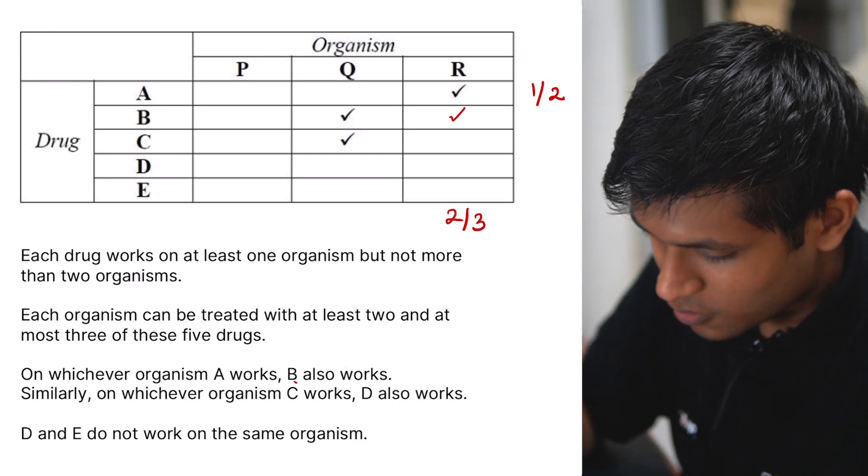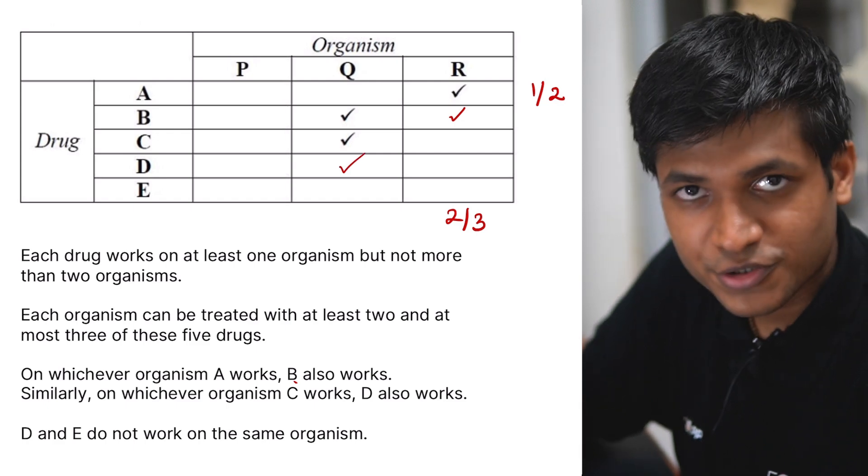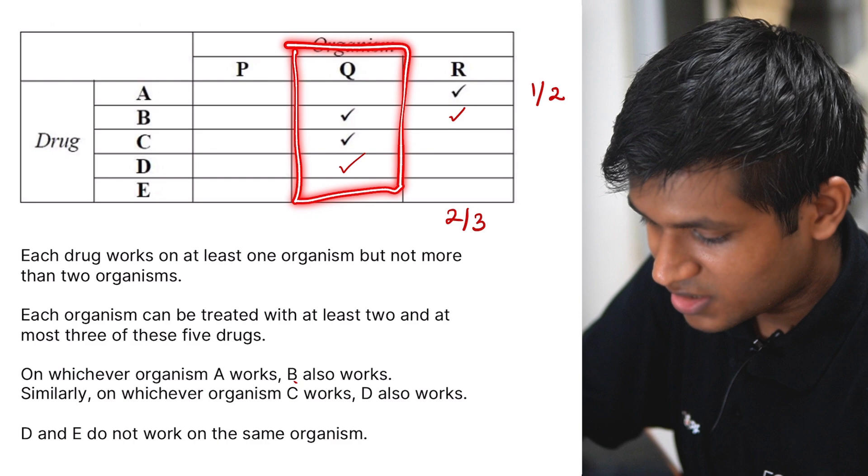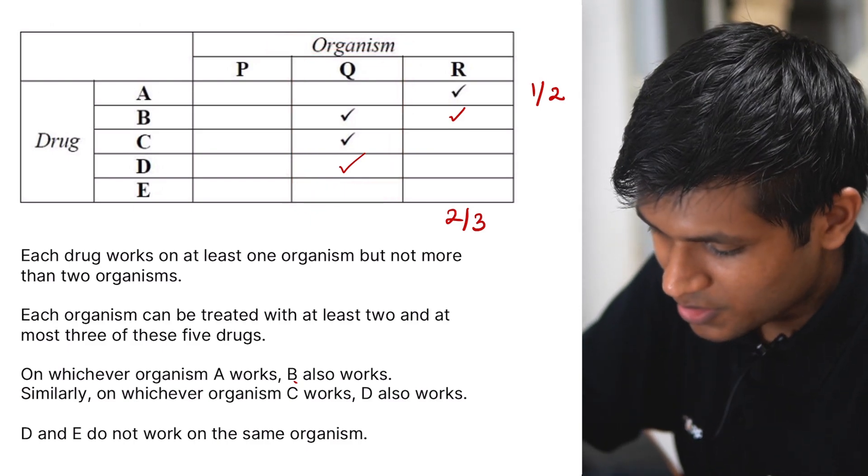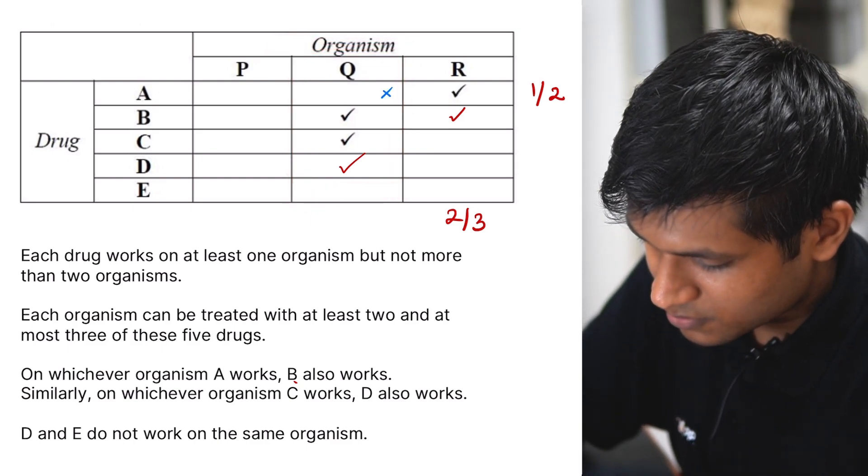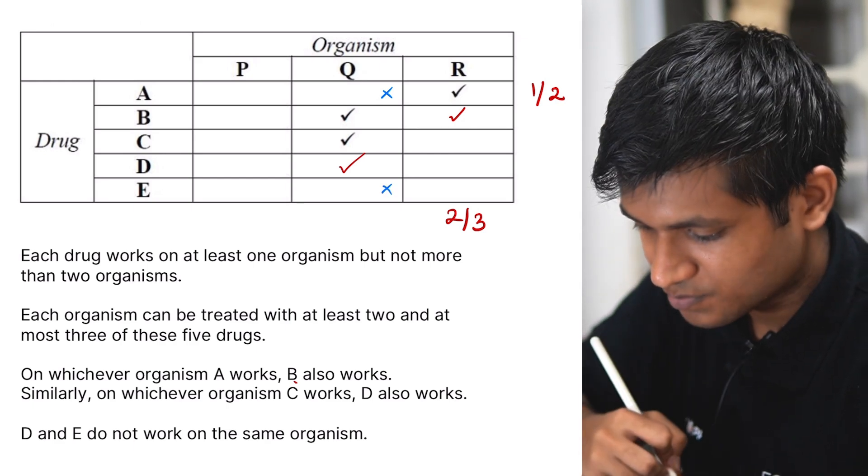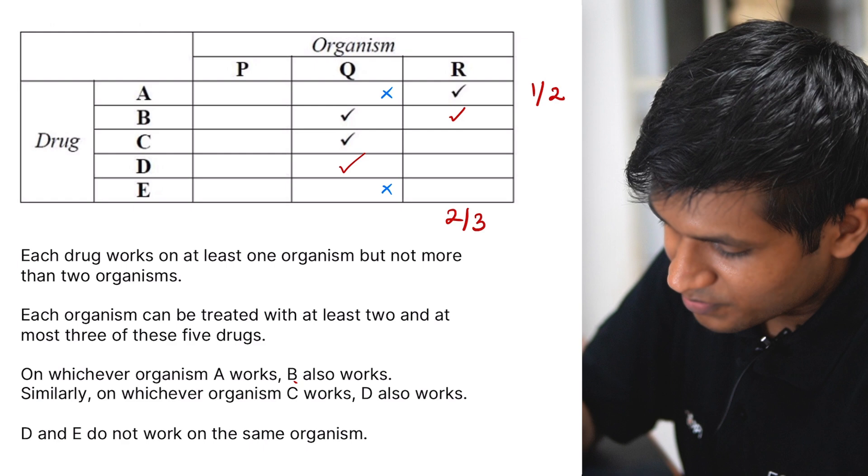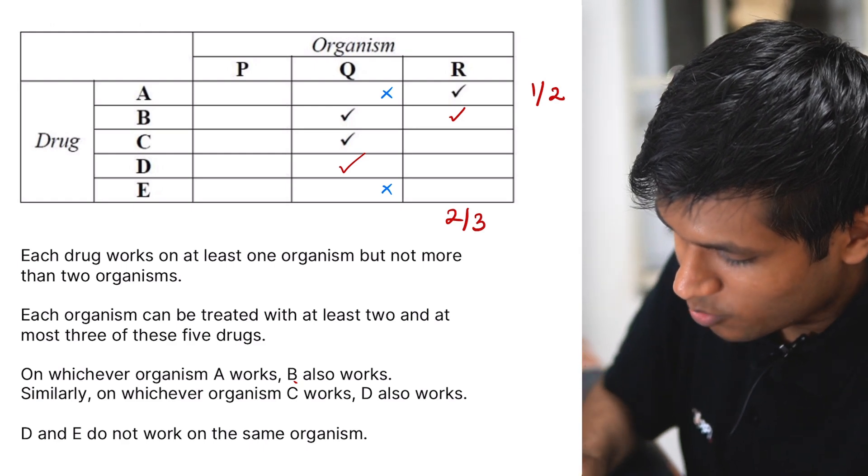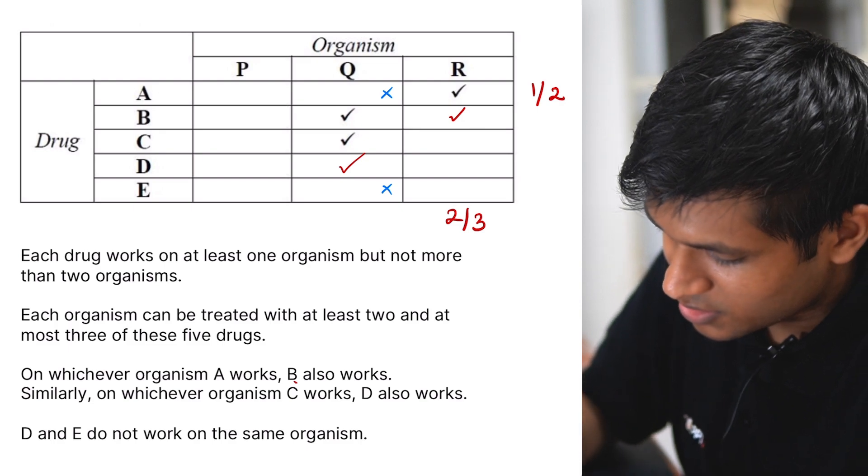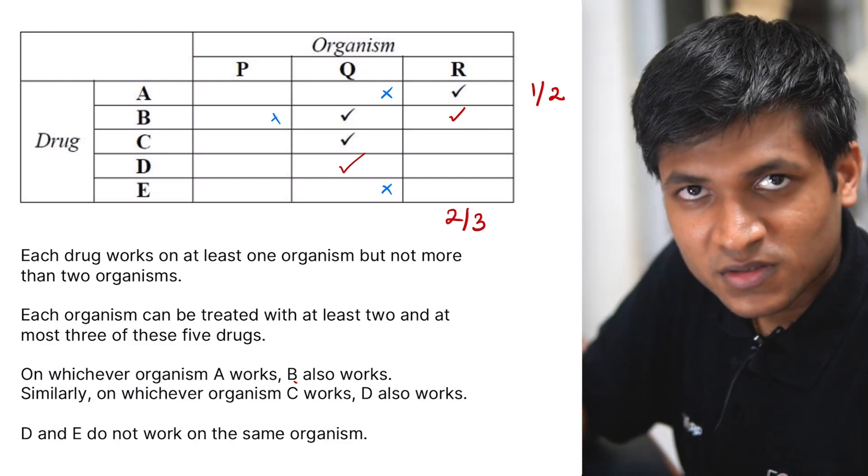So C works on Q, so D will also work on Q. And we know we can have a maximum of three tick marks in a column like this. So the remaining things have to be a no. Now, we also know we can have a maximum of two tick marks in a row. That means this will also be a no.